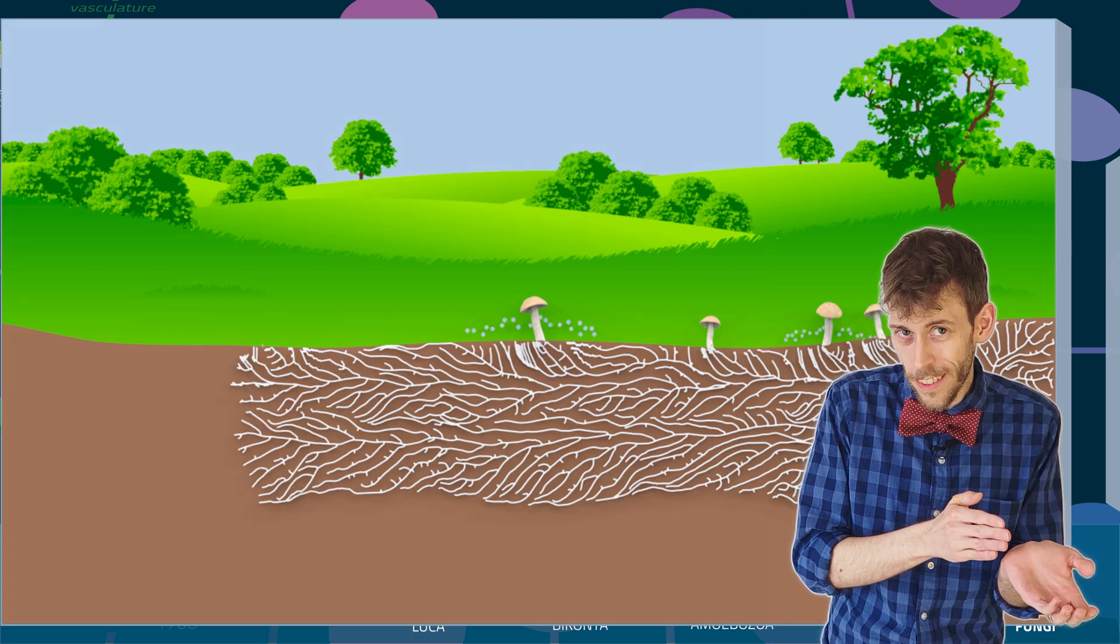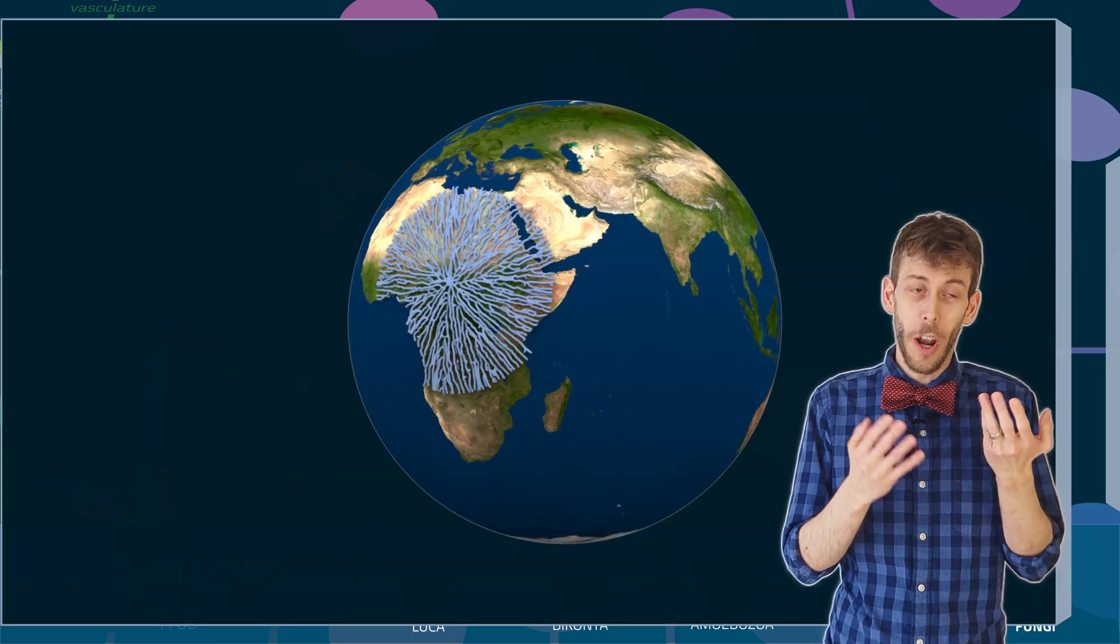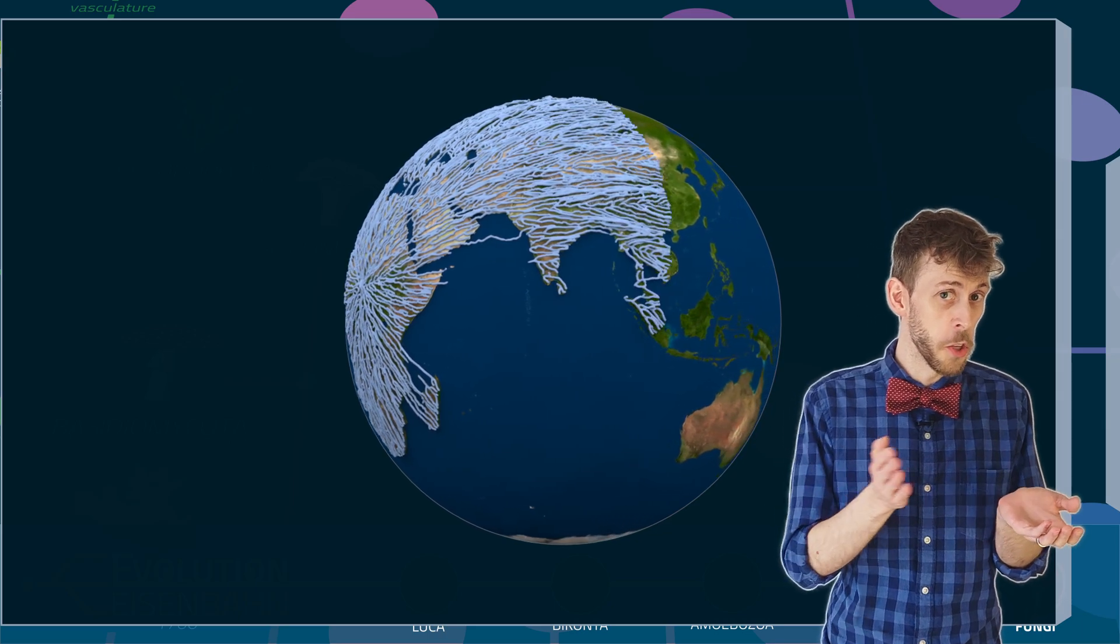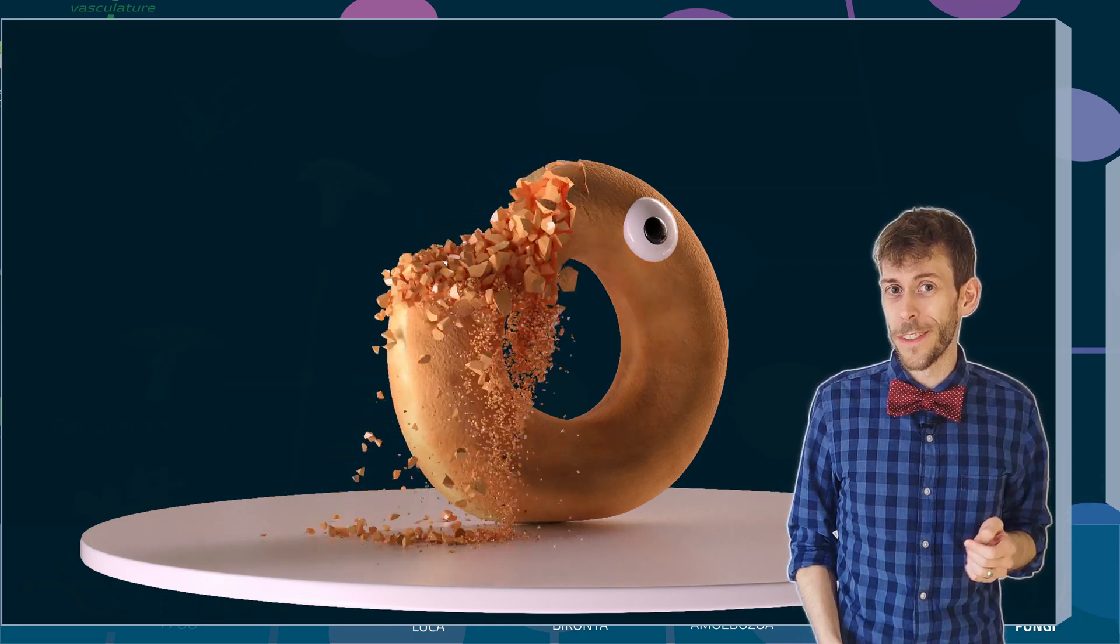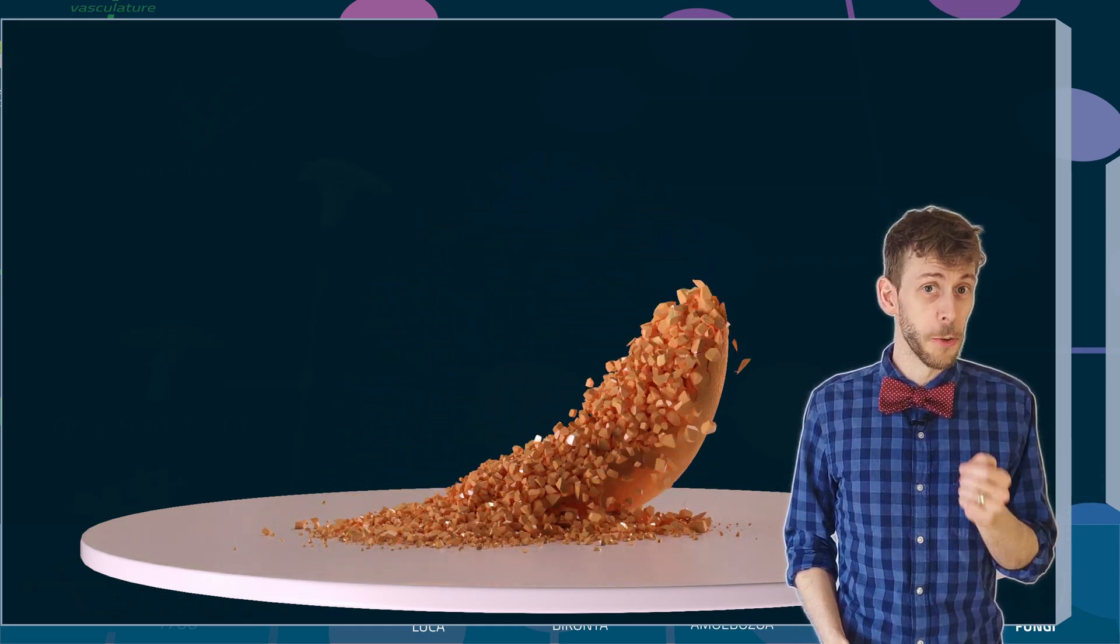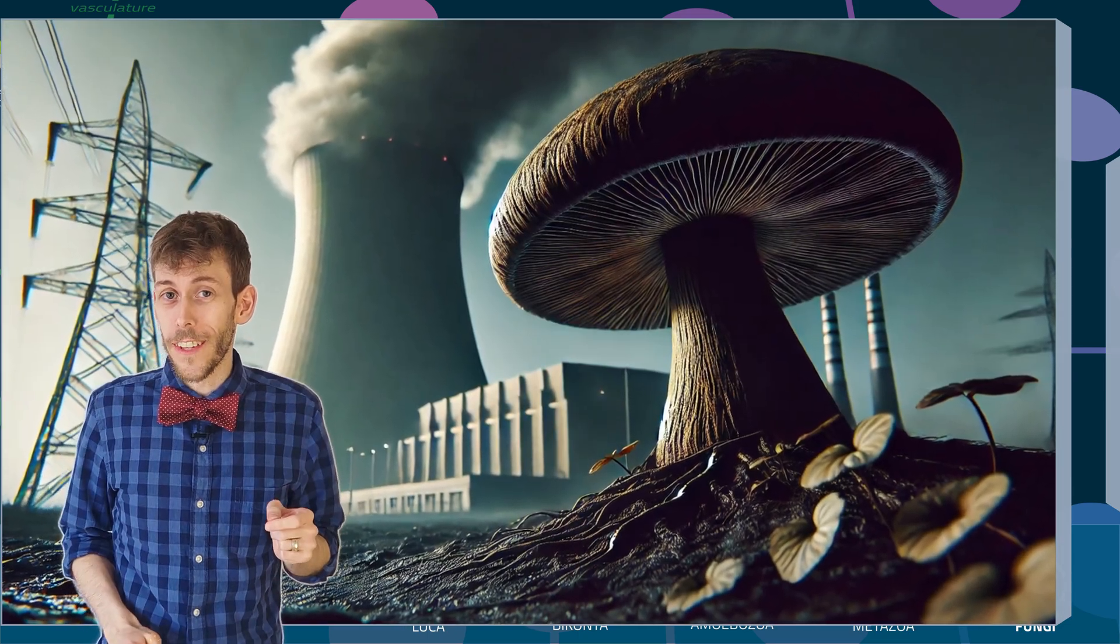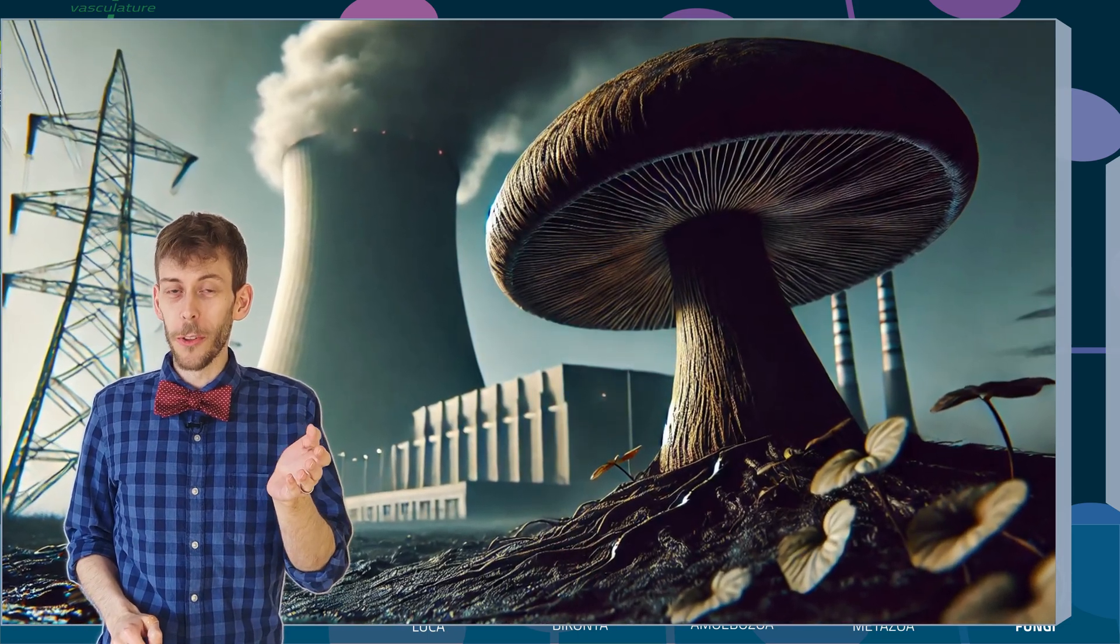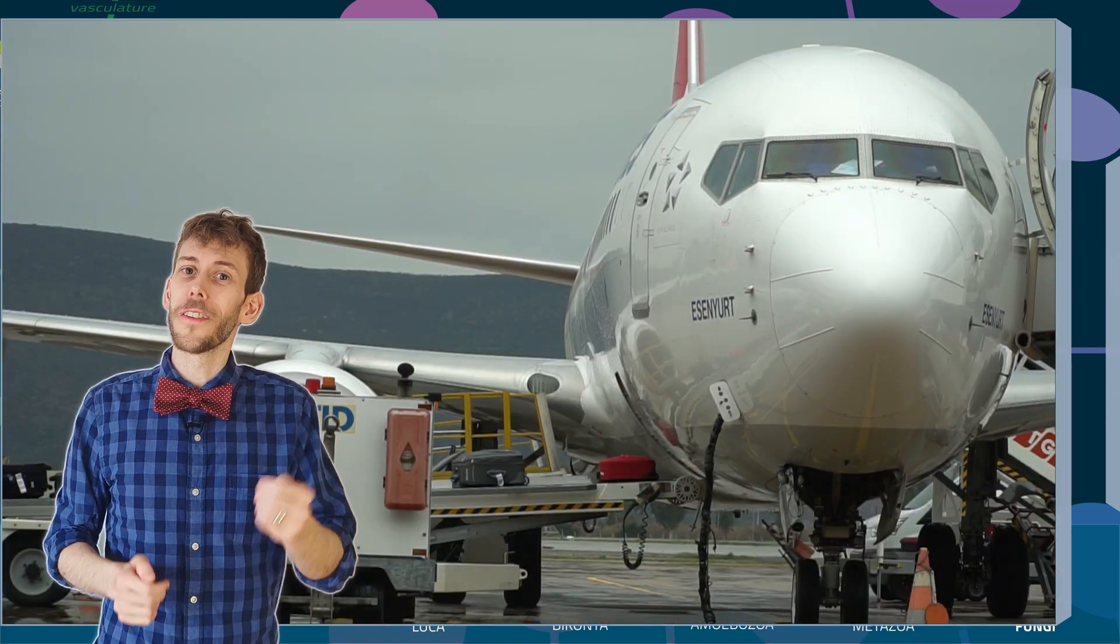But on the other hand, animals can only be at one place at a time. Whereas a large fungus, and they can get enormous, can basically eat everything everywhere all at once. And when I say everything, I do mean everything. There are fungi that eat radioactivity and they grow in Chernobyl towards the broken reactor. There are fungi that eat alcohol fumes and grow on the ceilings of distilleries.